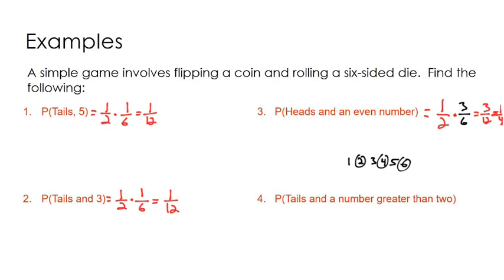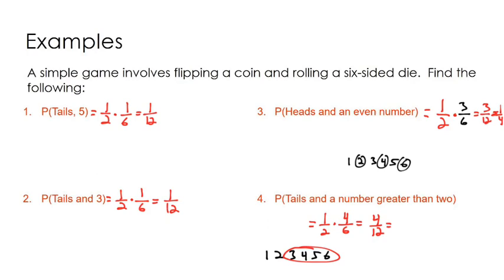What's the probability of tails and a number greater than two? Tails is one half. For a number greater than two on the die: we have three, four, five, six — so four of those outcomes are a success. If I multiply one half by four over six and multiply straight across, we get four over twelve, which is one third.